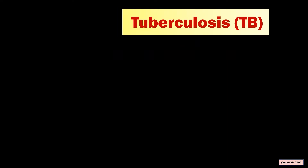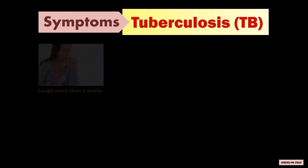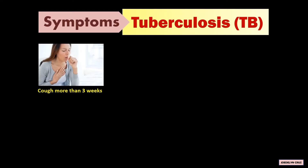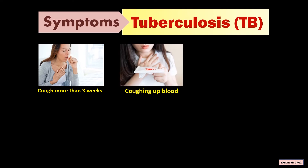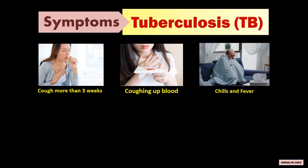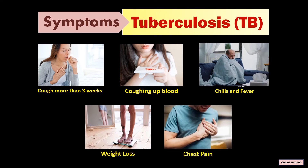The symptoms of TB include a cough that lasts for more than three weeks, coughing up blood, chills and fever, weight loss, and chest pain.